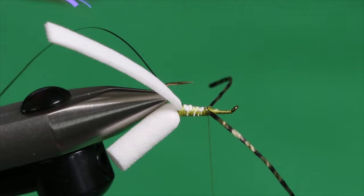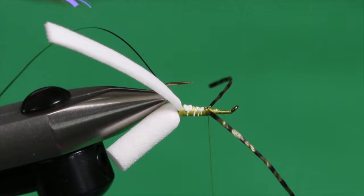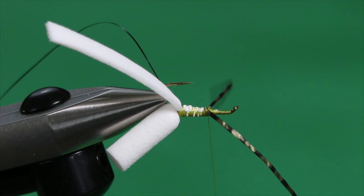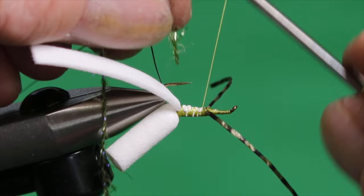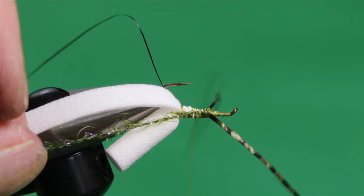All right, for the body, we're going to use some of the Semperfli straggle string in dark green olive. Really a good color match for the backswimmers that I've seen, especially those in my local waters. So we're going to tie this in right behind the legs. Secure that down.